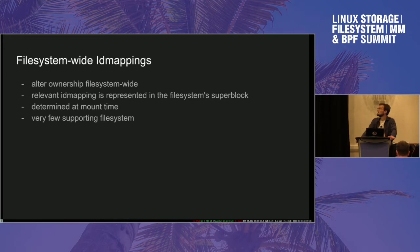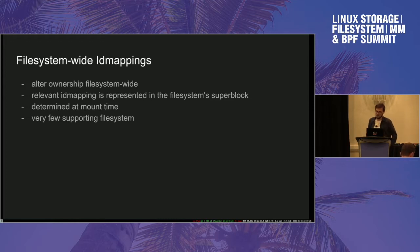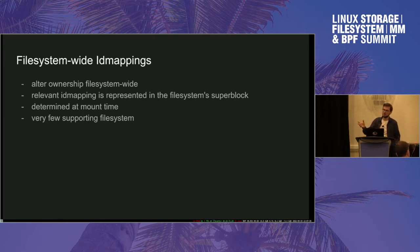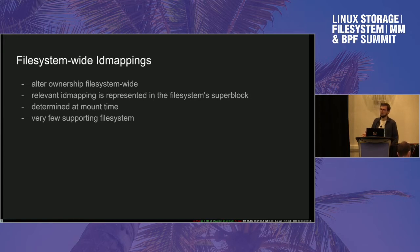Another issue is that filesystem-wide ID mappings do what they say: they change ownership filesystem-wide. So even if you could mount one of those filesystems inside a user namespace, the ownership changes would apply to the whole filesystem. And when you think of containers as a bunch of mounts put together — a rootFS plus additional bind mounts for data sharing — it's not always the case that all those individual mounts should have the same ID mapping.